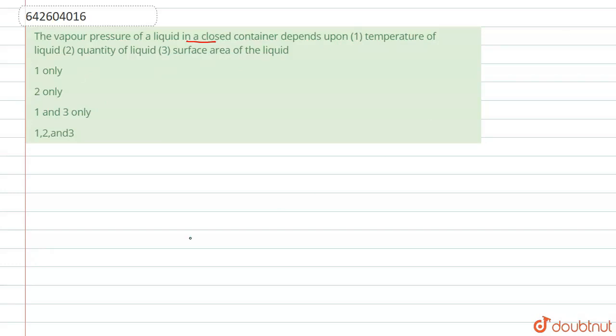So let us proceed further. First of all, let me tell you what is vapor pressure. So pressure exerted by the vapors above the liquid surface in equilibrium with the liquid at a given temperature is known as vapor pressure. Let us see at which factor vapor pressure depends.